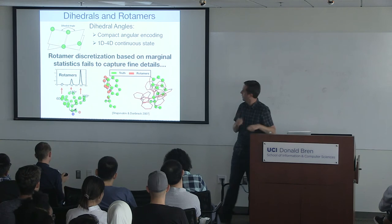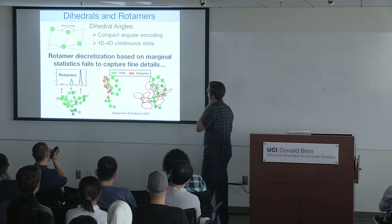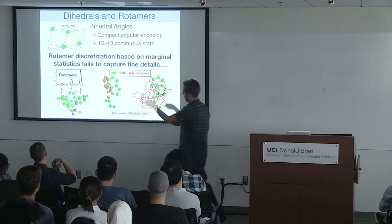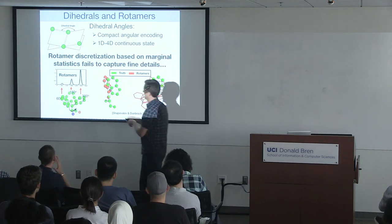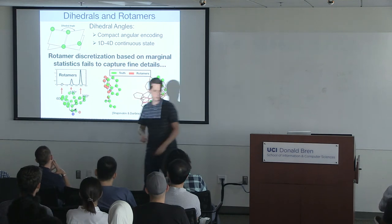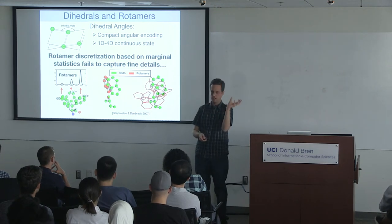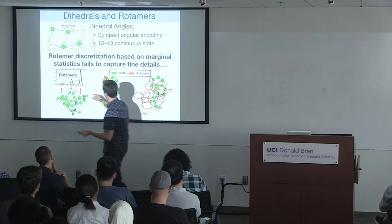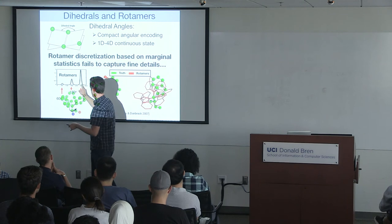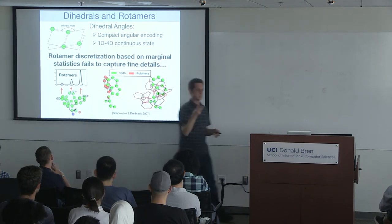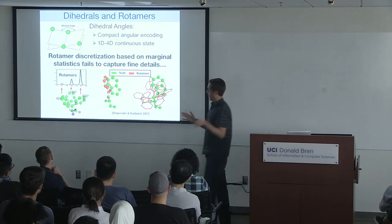The classic approach uses a discretization called rotamers: empirically, side chains tend to fall at one of about three angles, so you discretize by assuming three possible states per side chain. This makes the problem tractable but loses information. For some proteins, the true structure from X-ray crystallography doesn't line up well with any rotamer. X-ray crystallography is very hard — a graduate student might get their PhD for determining the structure of a single protein, six years equaling one protein structure.